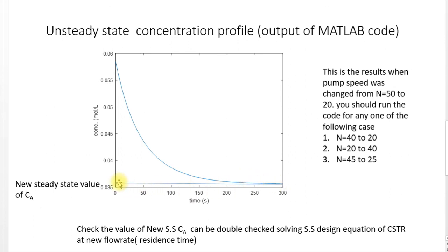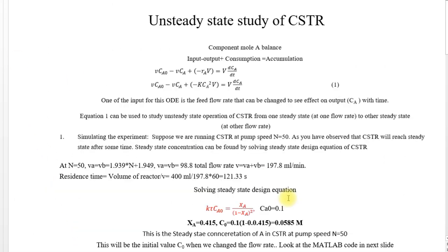This value is a new steady state and you can double check this value by solving the design equation of steady state. The one we did it in the beginning at this flow rate, the first flow rate, we got the concentration. You can get the second concentration for the second flow rate.